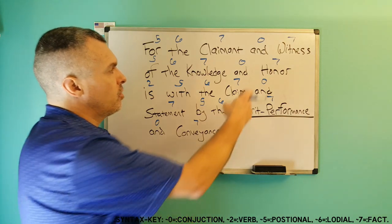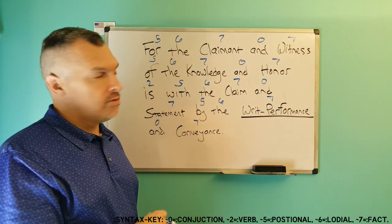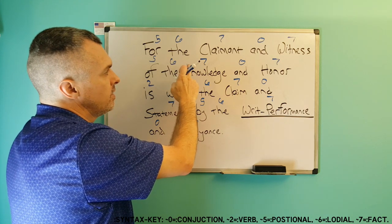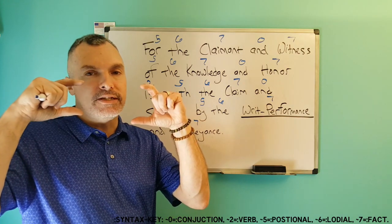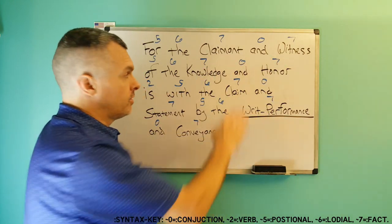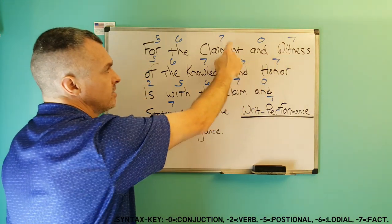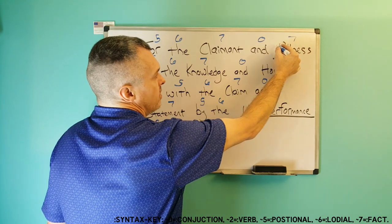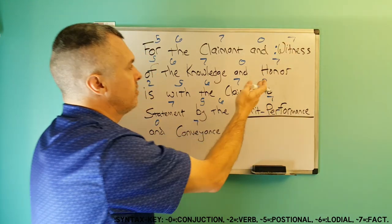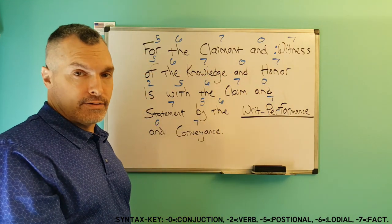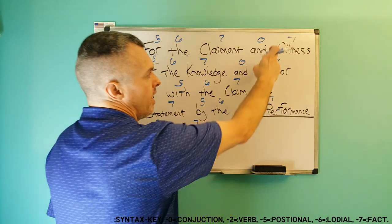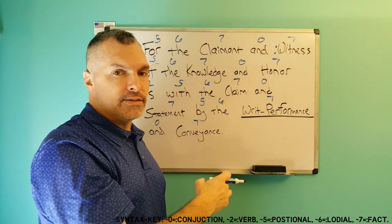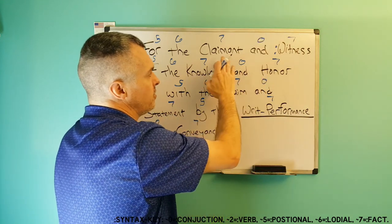Now some people like to put colons after conjunctions. For example: 'for the claimant and witness' — 'for the' is the positional and lodial phrase that pre-positions 'claimant' and 'witness.' So claimant and witness have been positioned as facts, seven and seven, by the five, six. Some people like to put a full colon after the 'and' so that it would read 'for the claimant and for the witness,' which is correct. However, I like to simplify and take that out, because 'and' does not affect the syntax — it does not affect anything other than being a neutral bridge between facts.